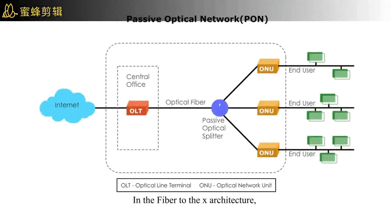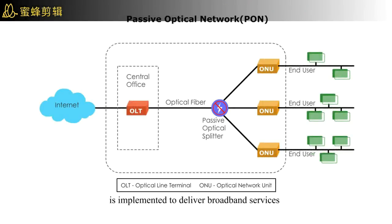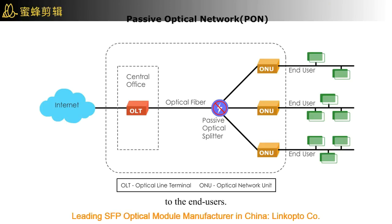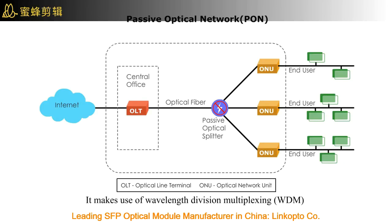In the fiber-to-the-X architecture, Passive Optical Network, or PON, a set of standards and protocols is implemented to deliver broadband services to end-users. PON is a shared network with point-to-multipoint topology. It makes use of Wavelength Division Multiplexing, or WDM, technology to increase the bandwidth per fiber.